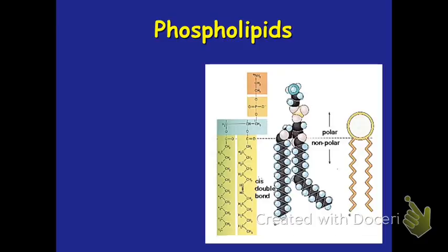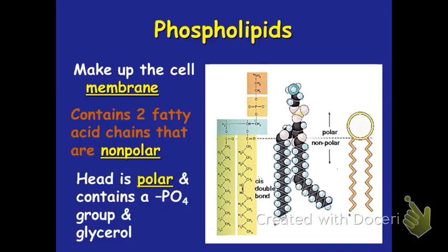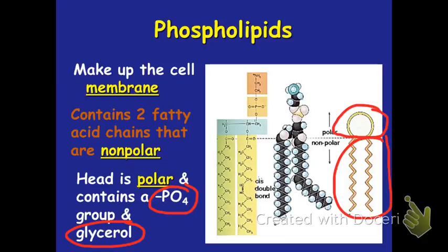Let's talk in detail about phospholipids and their structure. Their role is to make up the cell membrane, and they contain two fatty acid chains that are nonpolar and a head that is polar, because it has a phosphate group and a glycerol. You can see the head is polar and the tails are nonpolar. These properties are crucial because they determine how phospholipids are positioned in the cell membrane.